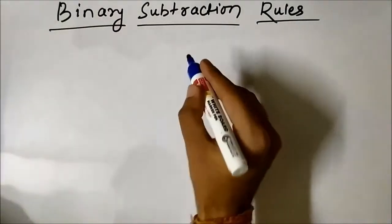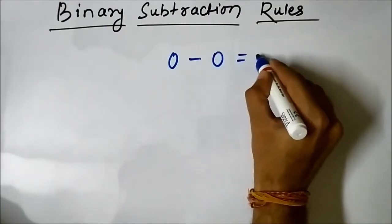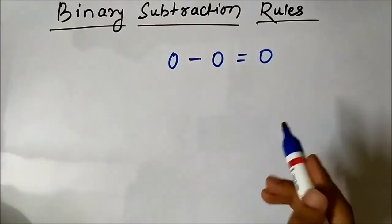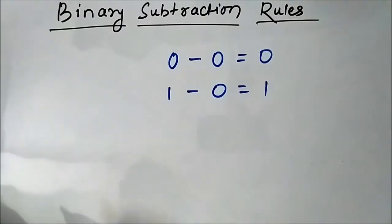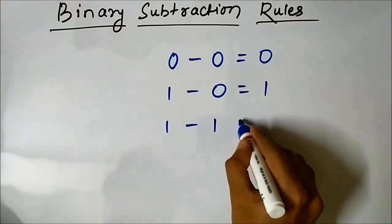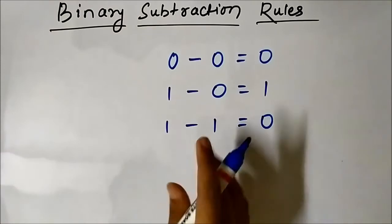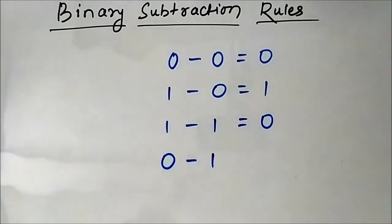So let us see the rules associated with the subtraction of one bit from the other. First: 0 minus 0 is equal to 0 — the same as in normal subtraction. 1 minus 0 is equal to 1 — also the same as normal subtraction. The third rule: 1 minus 1 is equal to 0, again the same as normal subtraction. Now the most important rule in binary subtraction is 0 minus 1.